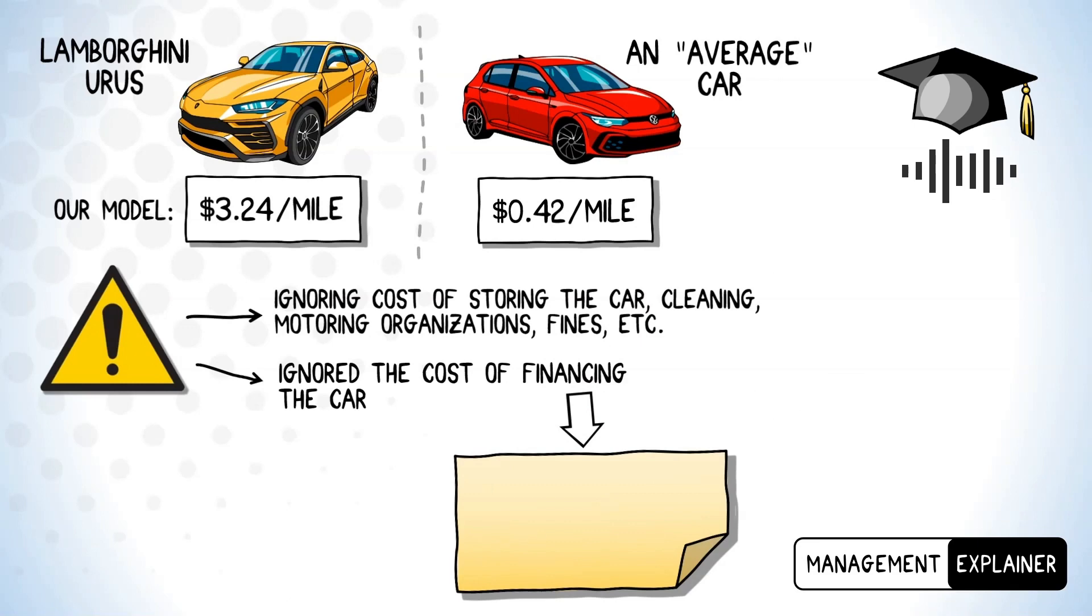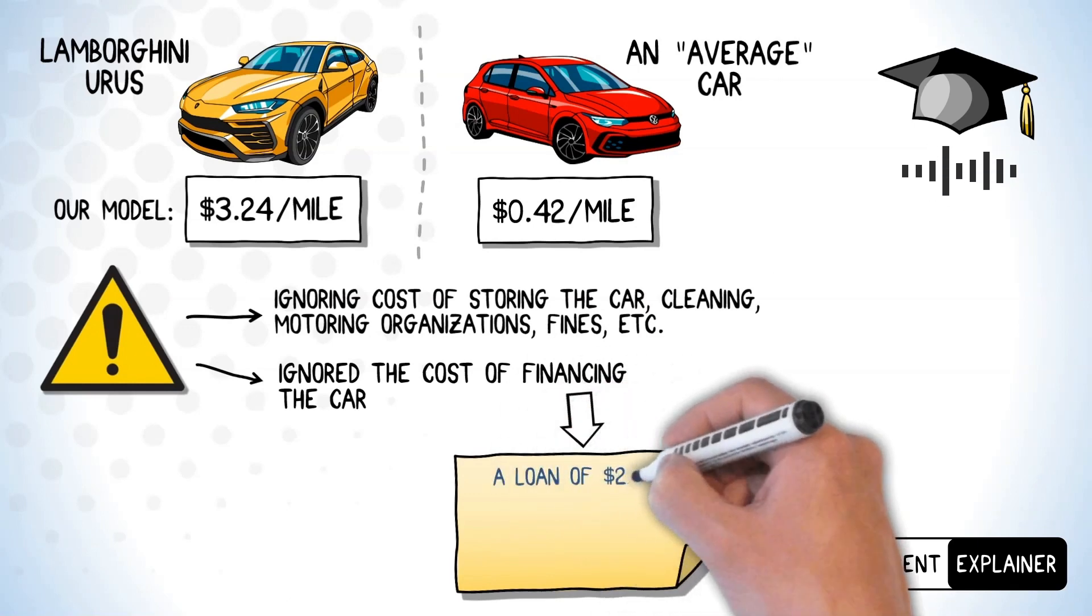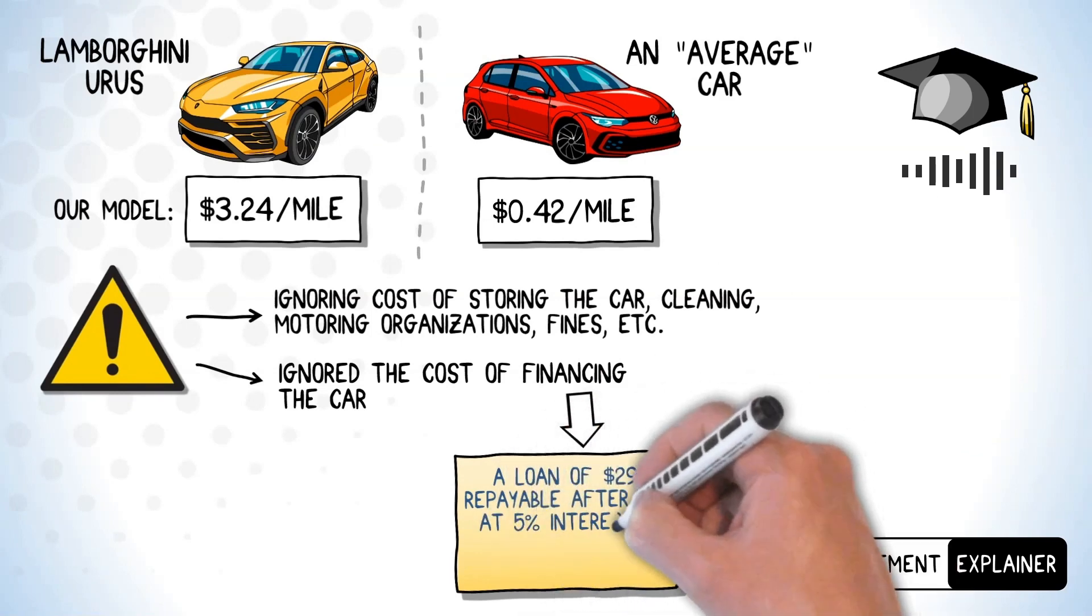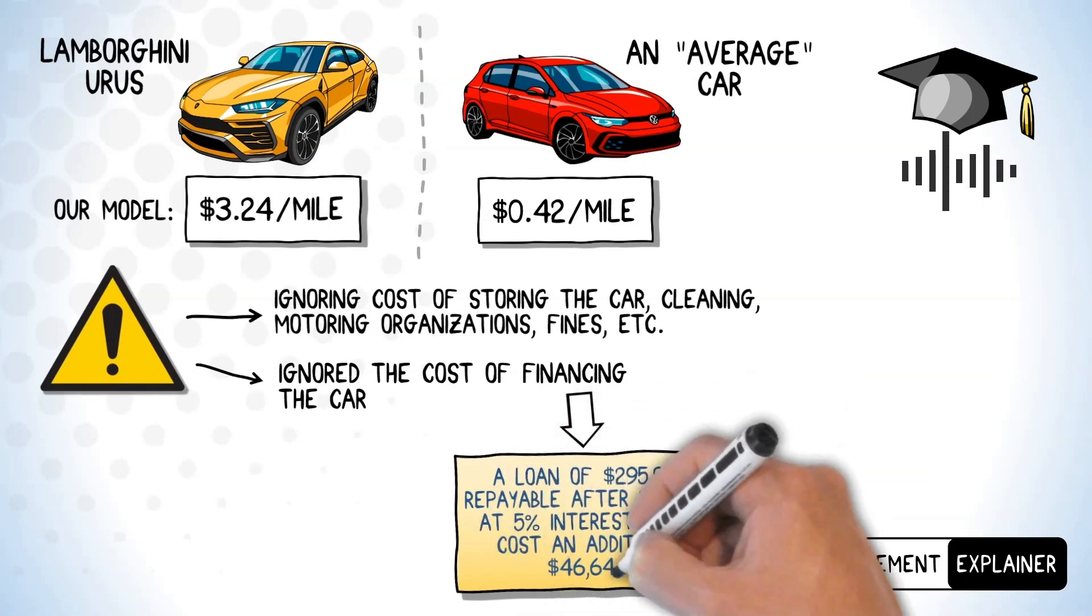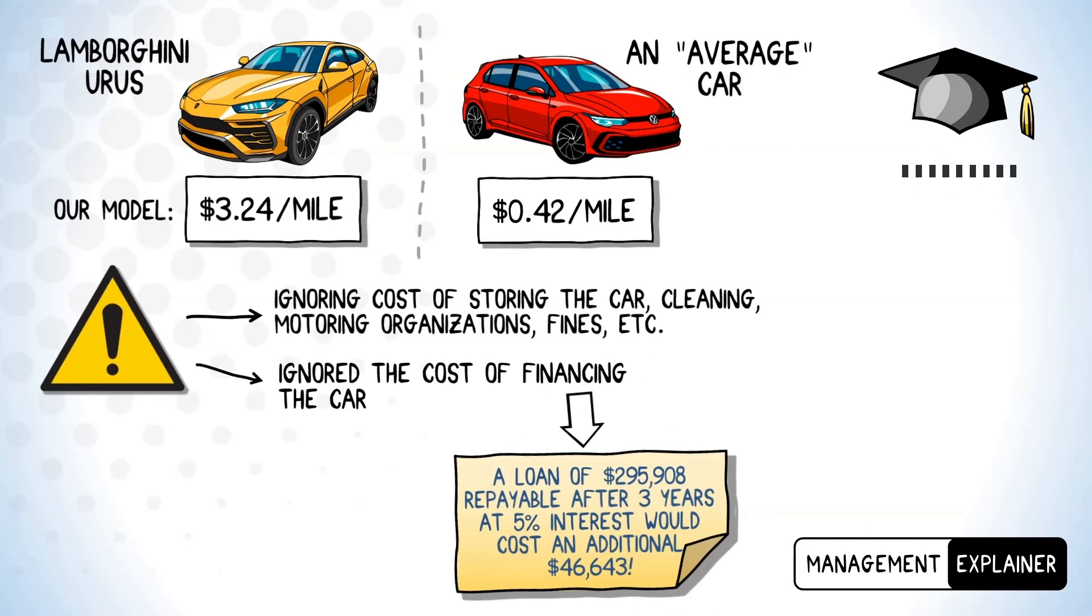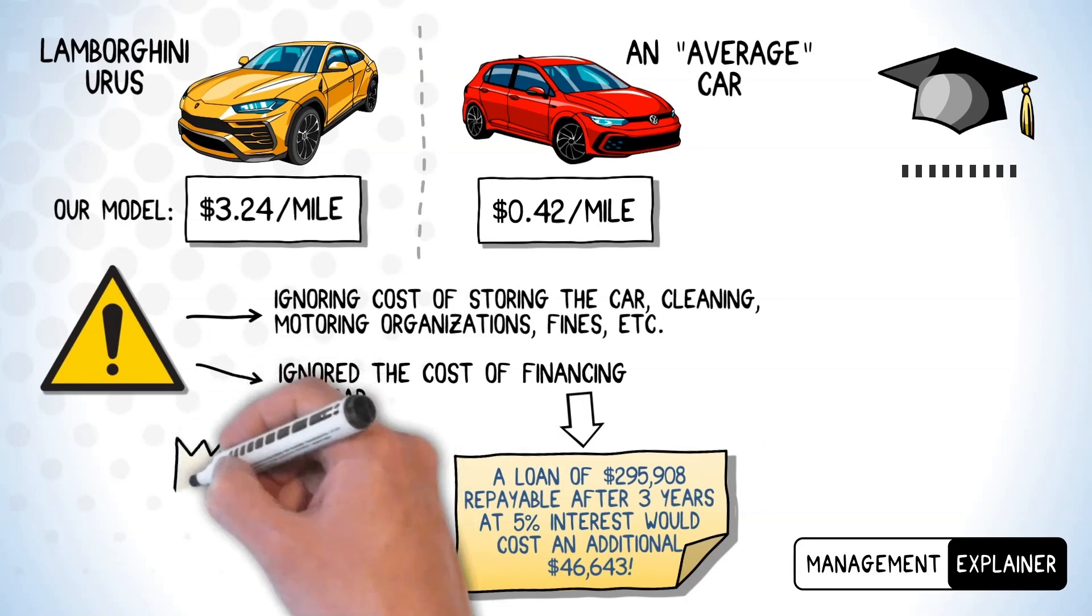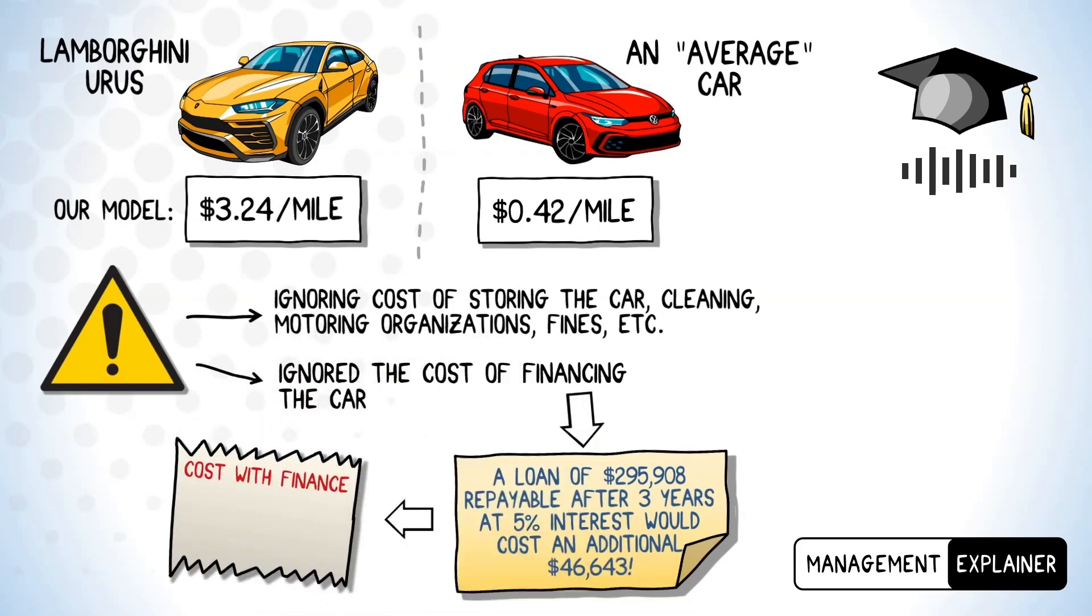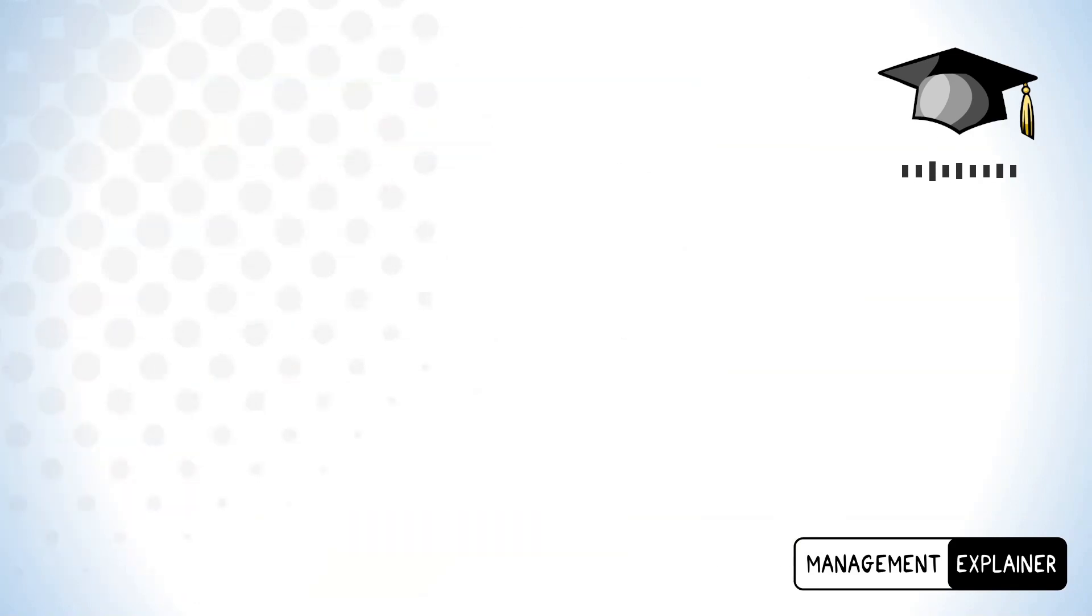A simple estimation of the overall compound interest on a loan covering the purchase price of the car, repayable after three years at an interest rate of say 5%, leaves us with an additional cost of around $46,643. If we include this in our model, the total bill in dollars per mile is around $4.80, which is now more than ten times as expensive as our average car.